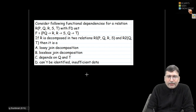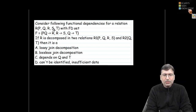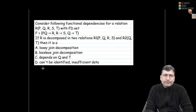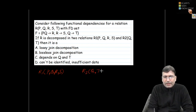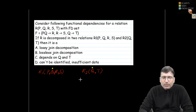Now let's solve the next problem. Consider a relation R with attributes PQRST and a given functional dependency set. R is decomposed into R1 having attributes PQRS, and R2 having attributes QT. As we discussed, there must be something in common between the two relations — Q is present in both, so the intersection gives us Q.